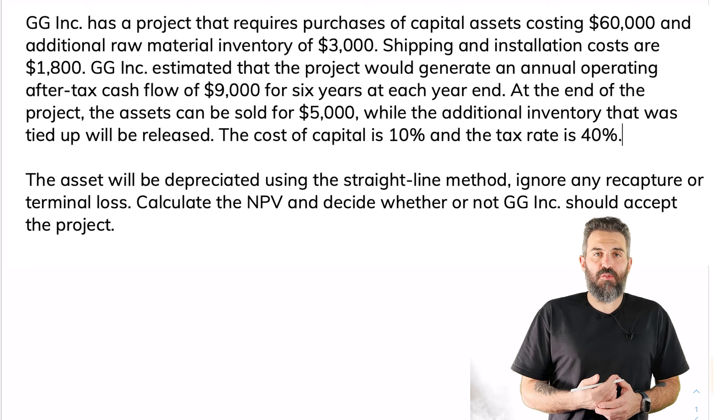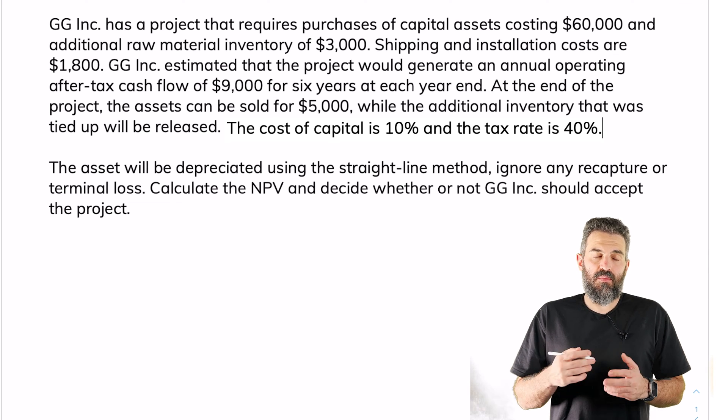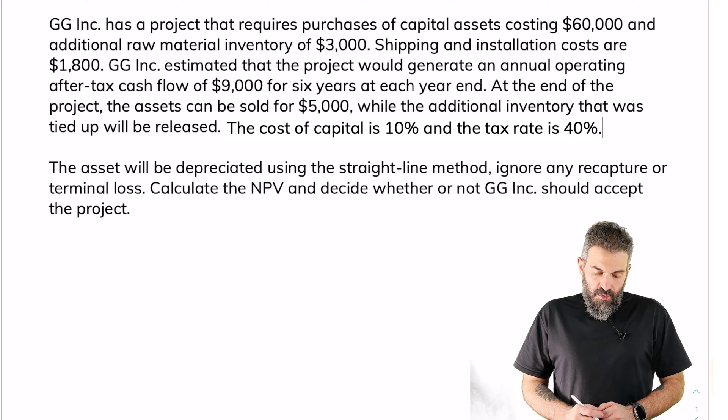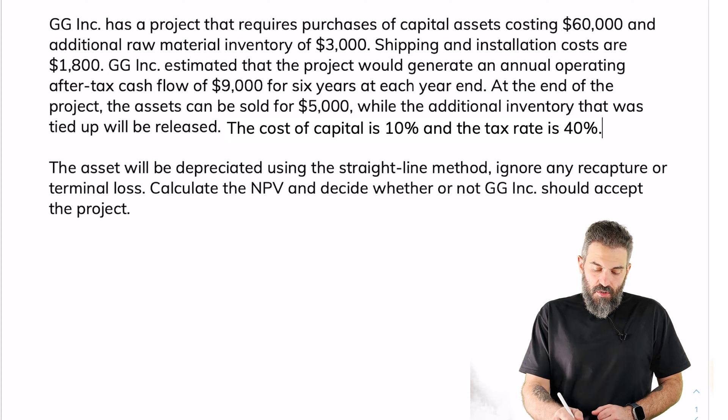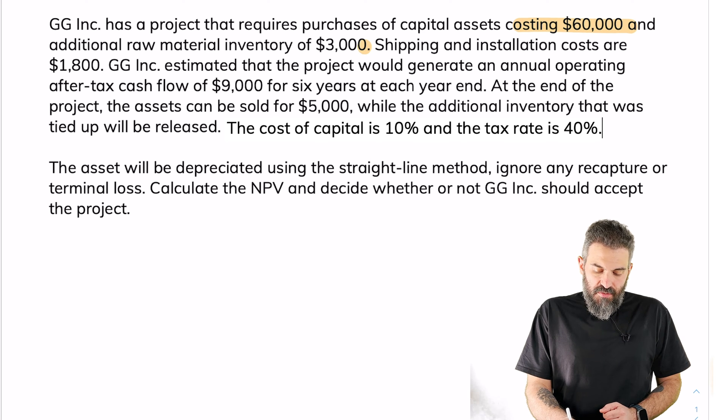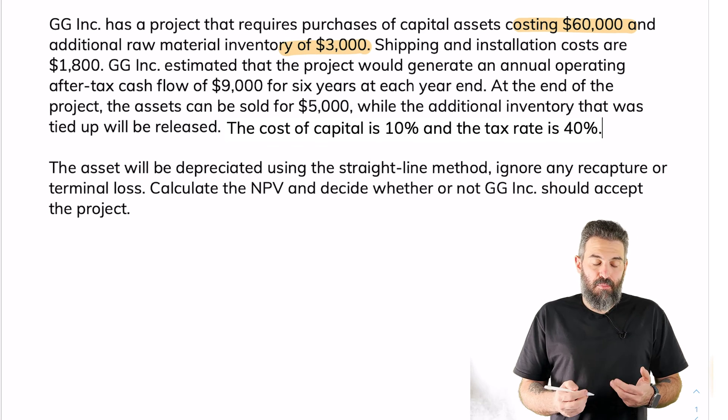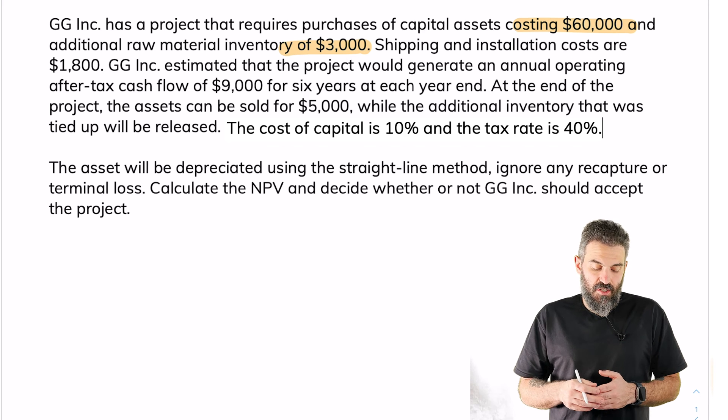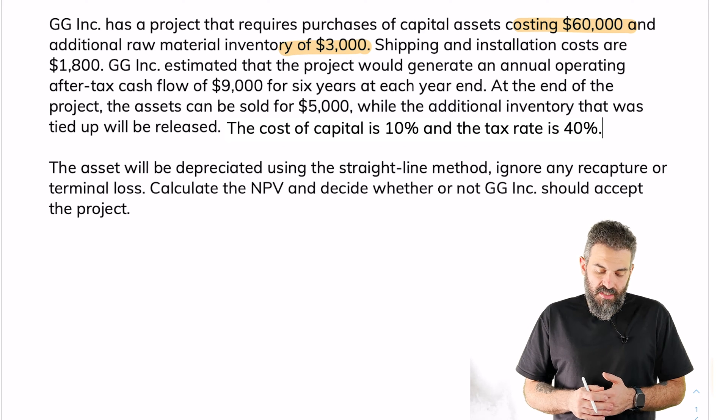Pause the video, try and solve the question yourselves, and then watch me solve it. Okay, let's jump in. So this project has an initial investment of $60,000. We can see that right over here, and additional raw materials of $3,000. That would be the networking capital. Shipping and installation costs are $1,800, so that'll be part of our capital costs.